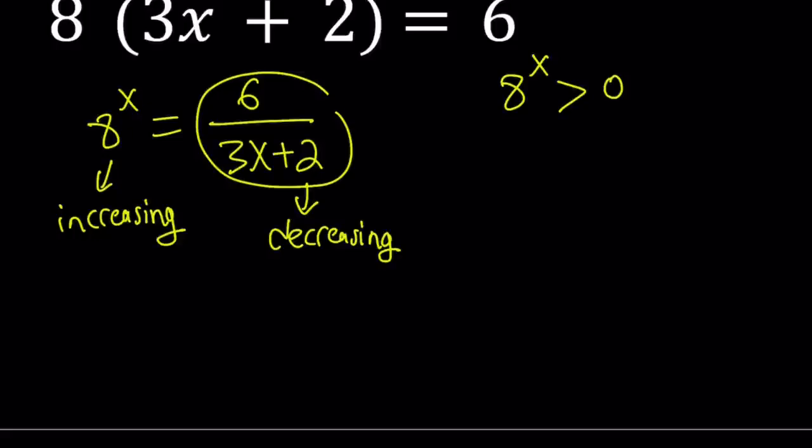So here's one thing to keep in mind. 8 to the power of x is always greater than 0. But 6 over 3x plus 2 can be negative. How? If the denominator is negative, then that's going to be the case. But let's go ahead and take a look at the limit.